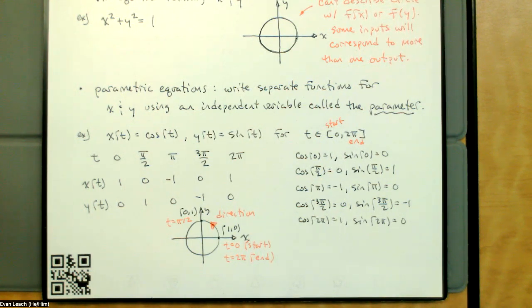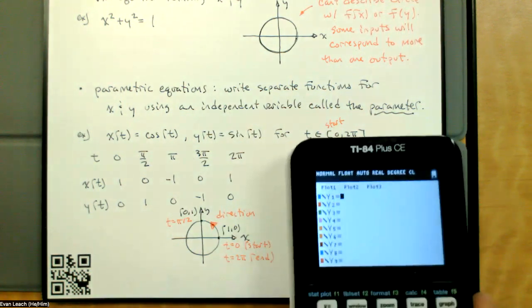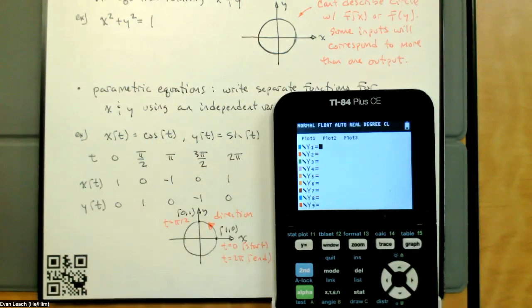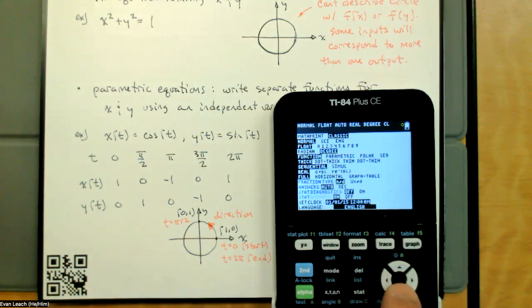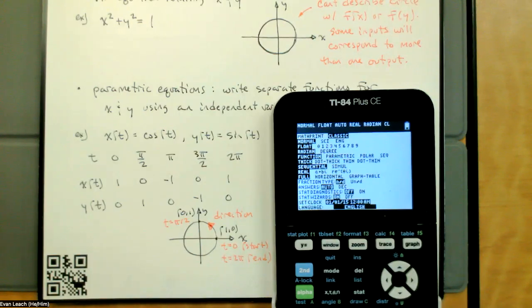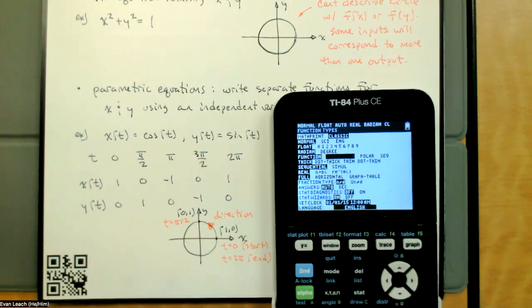This is a different kind of graphing - all we're doing is changing how we describe what's going on. We might be wondering: can our calculator do this? And I wouldn't have pulled out the calculator if calculators could not do this. We do have to tell the calculator we want parametric equations. So go into mode - first I'll switch to radians; you can tell I have a trig class because my calculator is in degrees. I'll also switch from function to parametric.